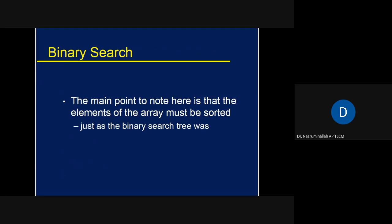In linear search we said it doesn't matter whether data is sorted or unsorted, because linear search was not taking any advantage of the sorted form — it treated sorted and unsorted data in the same way. However, binary search takes advantage of the sorted form of the data, and because of that advantage it is computationally efficient.